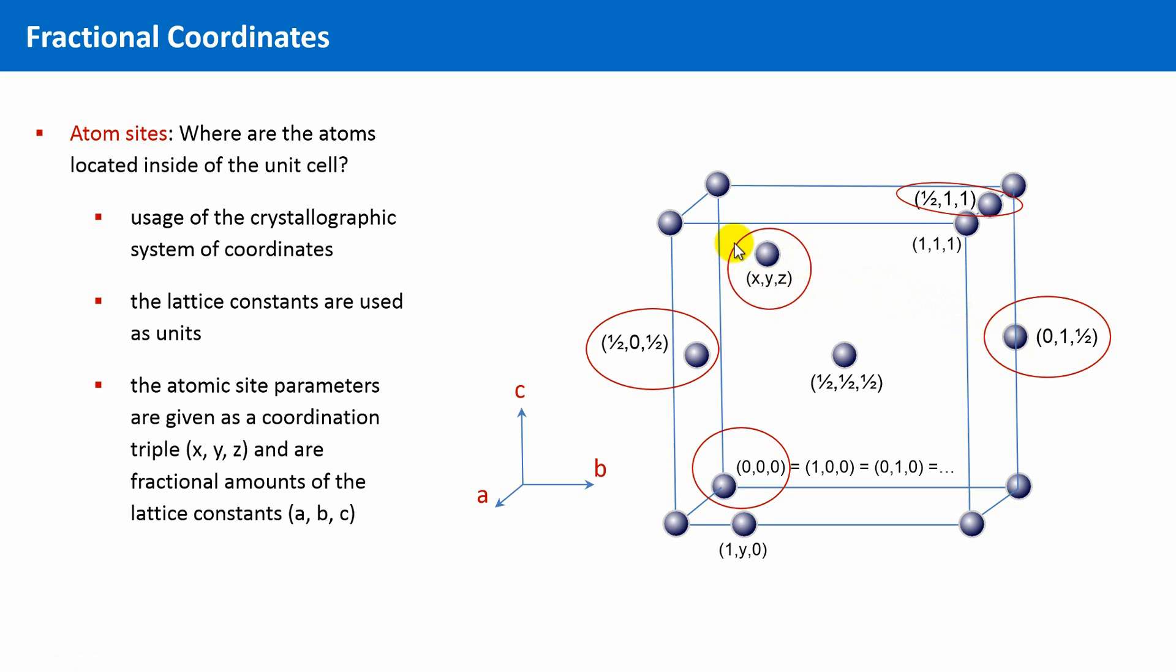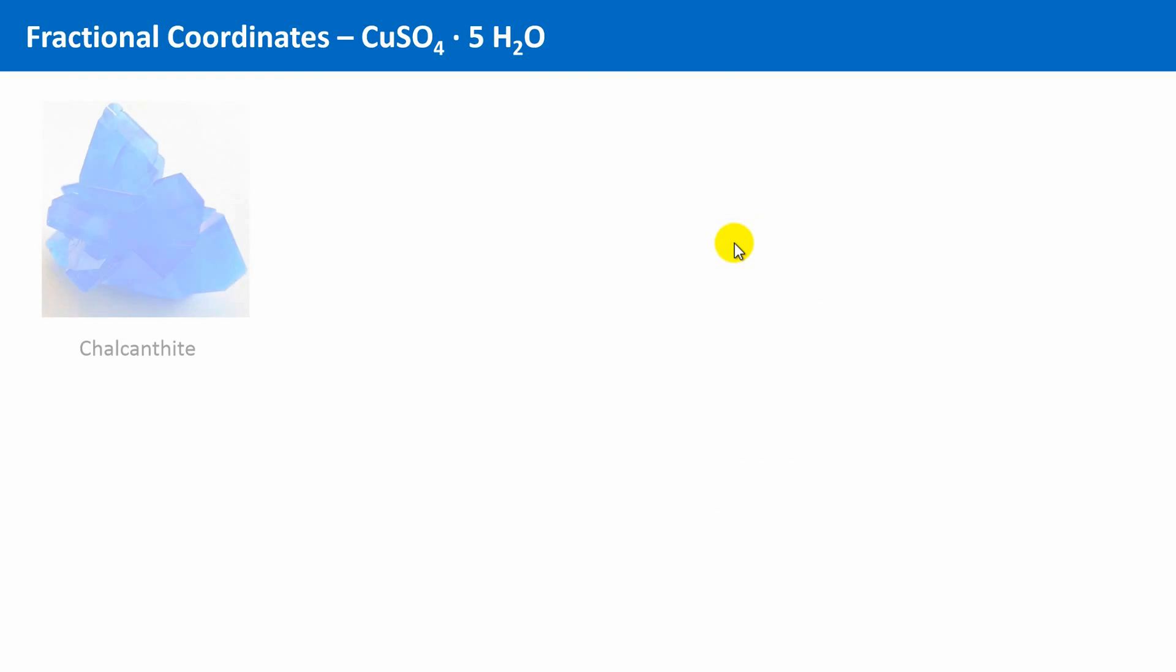Let's have a look at a real-world example. This is a sample of chalcanthite, copper sulfate with 5 water molecules. It crystallizes in the triclinic crystal system, and the unit cell parameters are as follows. This is the first set of parameters we need.